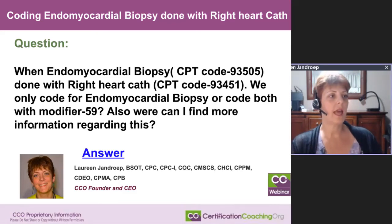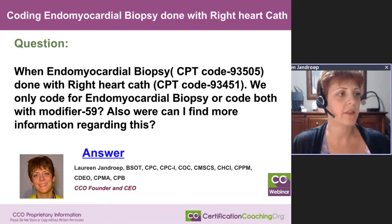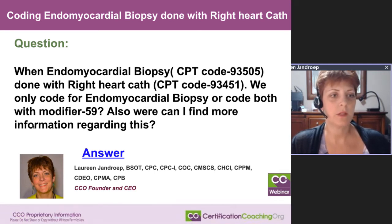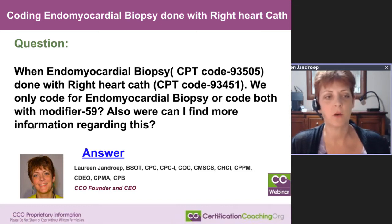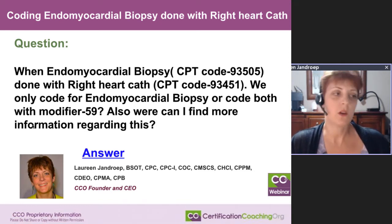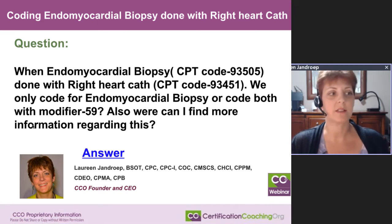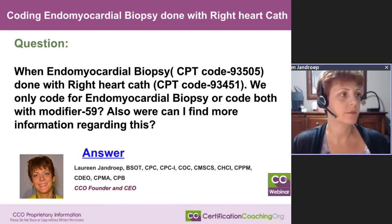Next question: coding endomyocardial biopsy done with the right heart cath. When endomyocardial biopsy, CPT code 93505, is done with the right heart cath, CPT code 93451, do we only code for the endomyocardial biopsy, or code both with modifier 59? Also, where can I find more information regarding this?